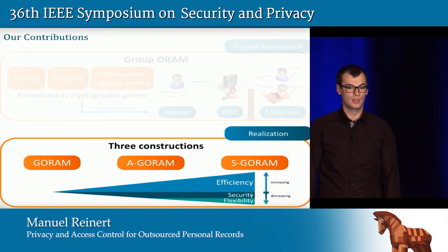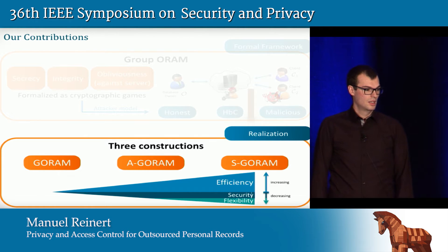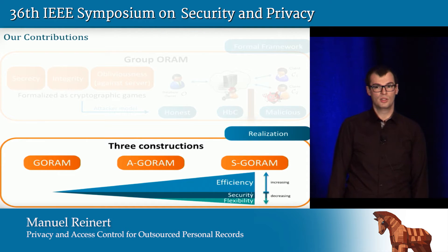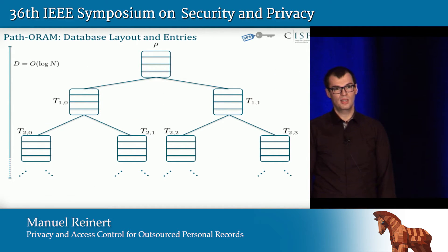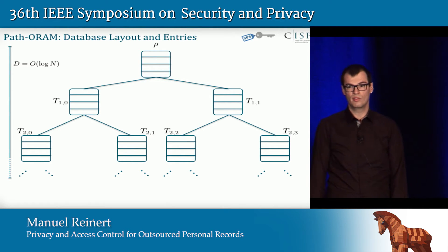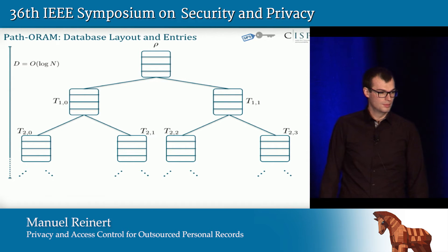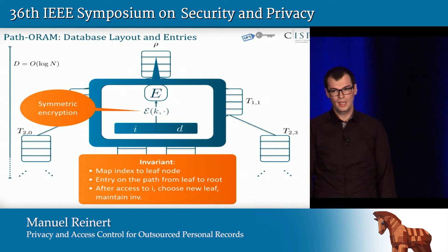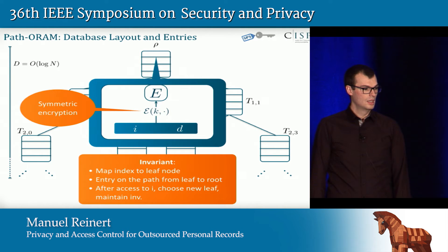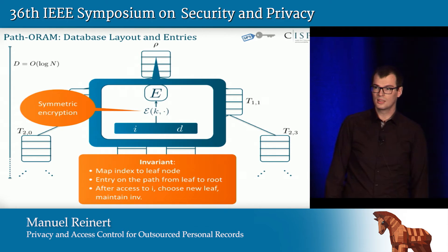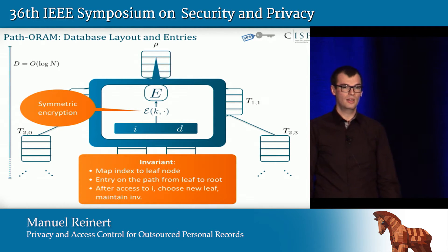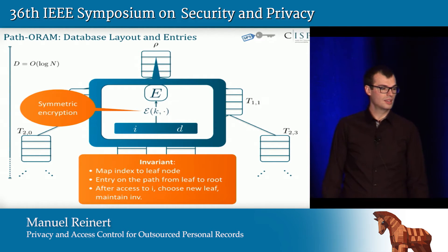Before presenting our own solutions, let me quickly recap what PathORAM does. In PathORAM, the database is basically a binary tree with n leaf nodes, where n is the number of entries, and every node can capture up to a constant number of entries. I abstract away from the stash, treating it as the root node. Throughout the algorithm, we maintain the invariant that indexes of entries are mapped to leaf nodes, and if you want to find an entry, you look up the leaf index and will find the entry somewhere on the path from that leaf to the root.